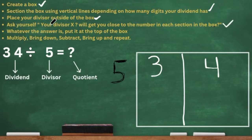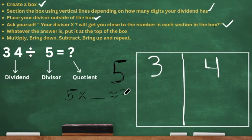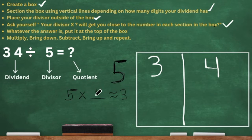Now ask yourself: your divisor times what number will get you close to the number in each section? So we ask ourselves, 5 times what number will get me close to 3, because 3 is our first digit inside the section. Well, 5 times 1 is 5, and 5 is close to 3, but we don't want our product to be higher than 3. So we say 5 times 0 gets us close to 3 without going over. We'll place that 0 at the top.